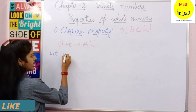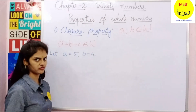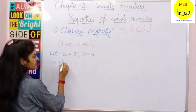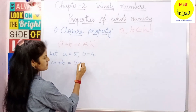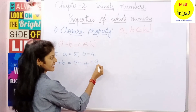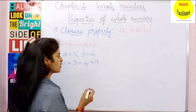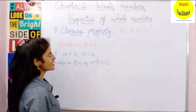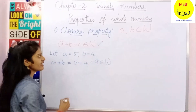Let A equal to 5 and B equal to 4. So what is A plus B? A plus B is nothing but 5 plus 4 which is 9. And 9 also belongs to whole numbers. So whole numbers are closed under addition.